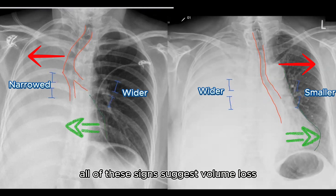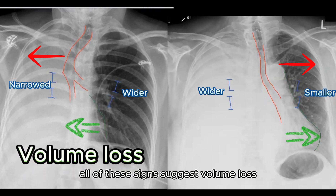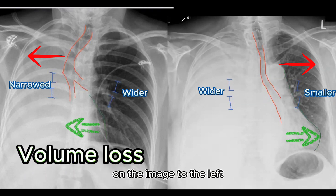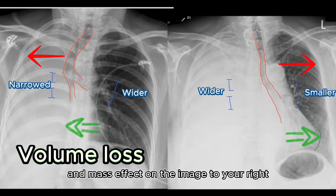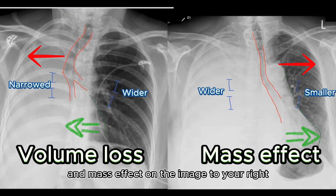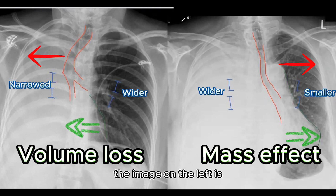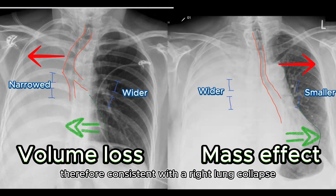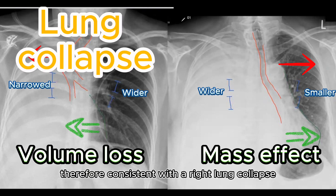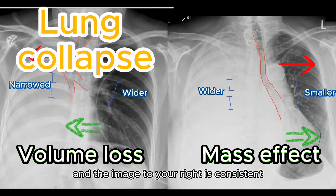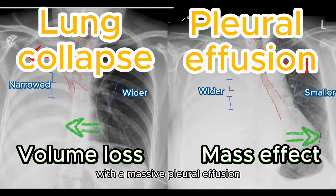All of these signs suggest volume loss on the image to the left, and mass effect on the image to your right. The image on the left is therefore consistent with a right lung collapse, and the image to your right is consistent with a massive pleural effusion.